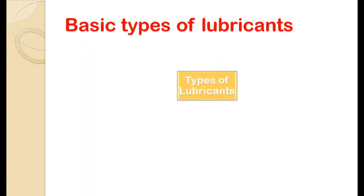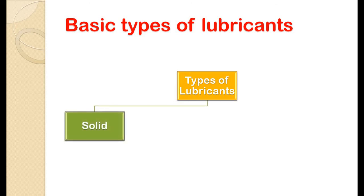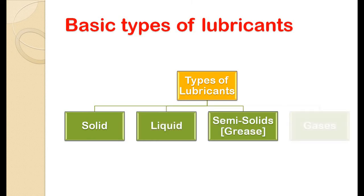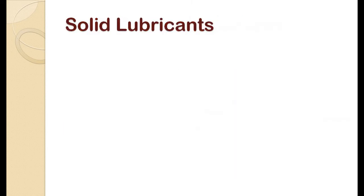Lubricants are basically divided into four types depending upon the physical state in which they are used in the system. These four types are: solid, liquid, semi-solid, and gaseous lubricants.